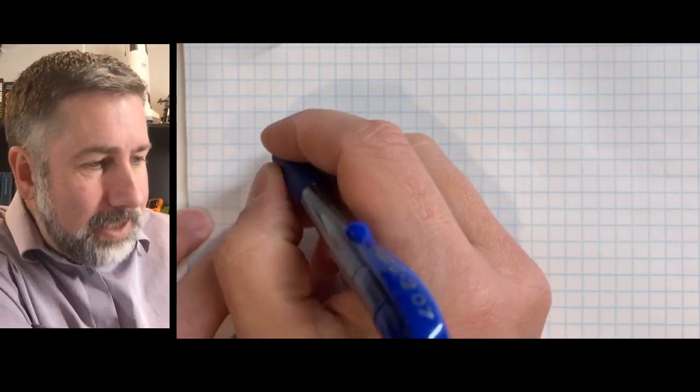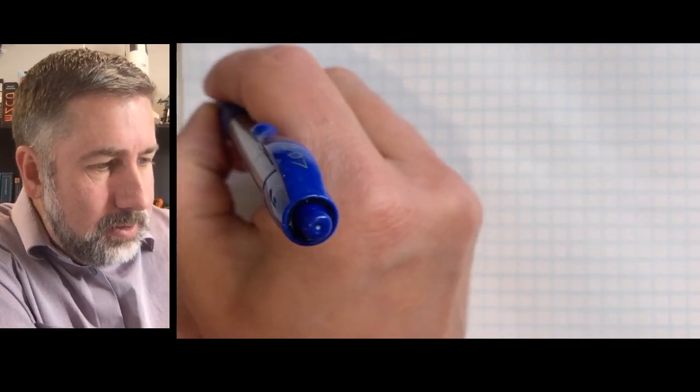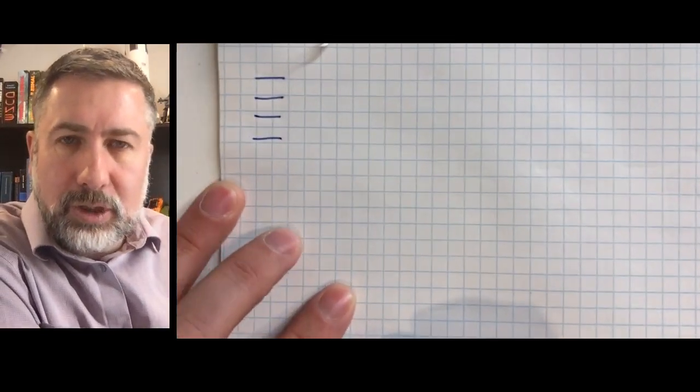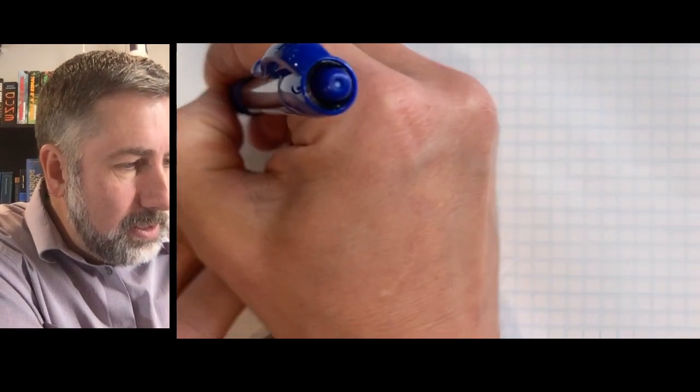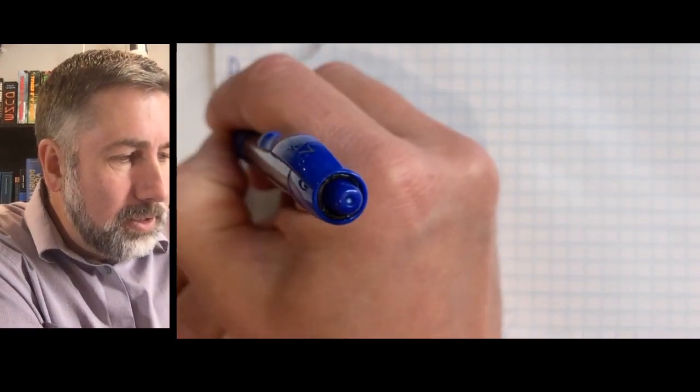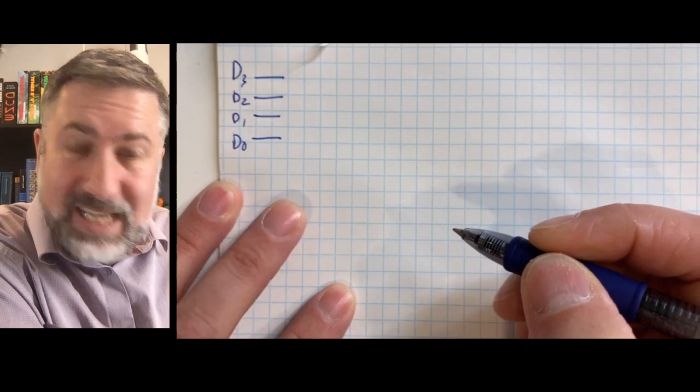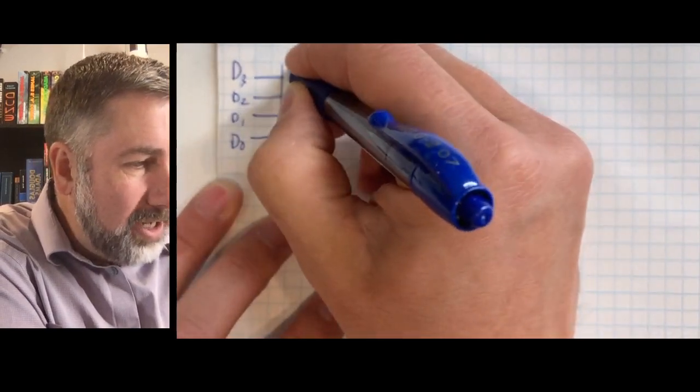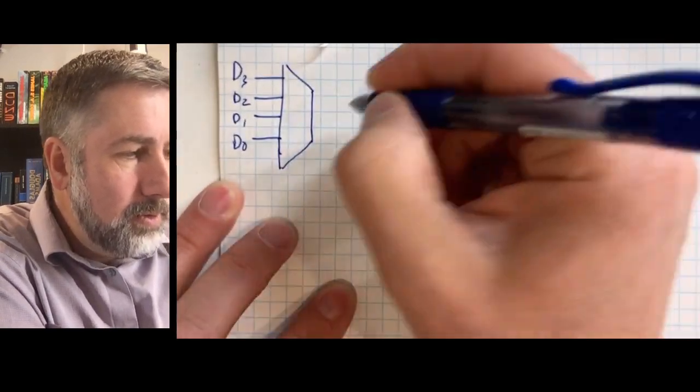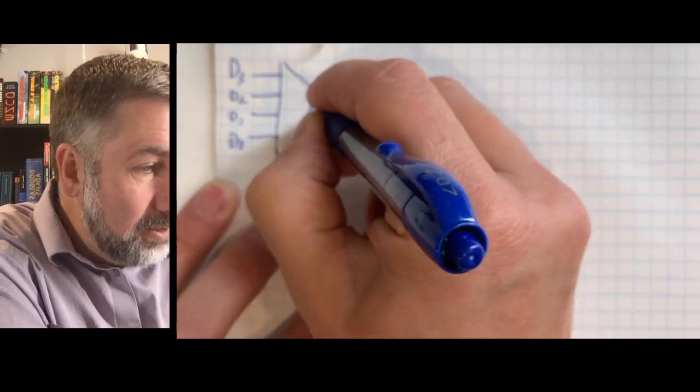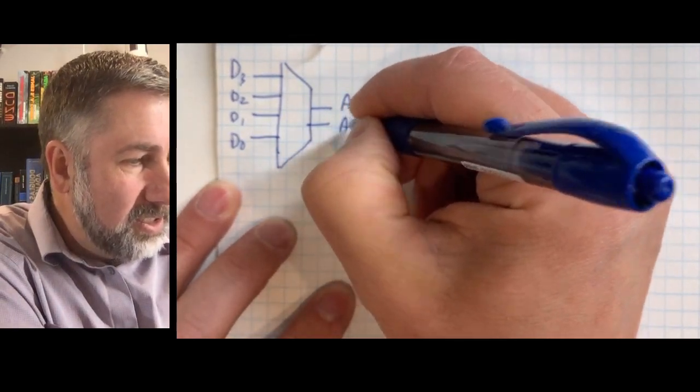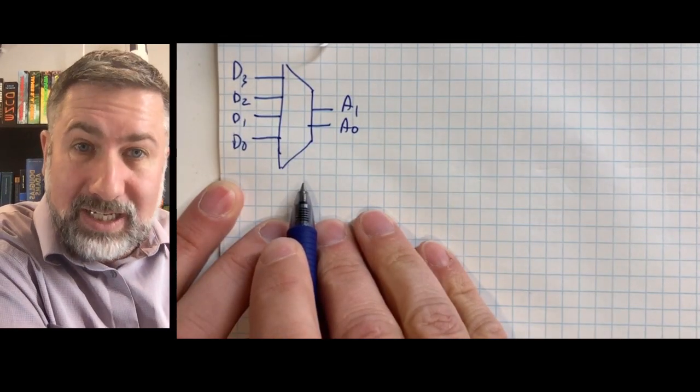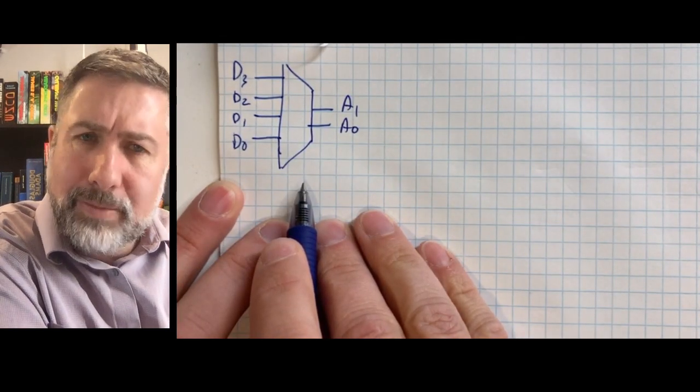So let's say we had four inputs, and again we're going to call these the data inputs D3, D2, D1, D0, and we want to know which of those is active. We need a box called an encoder that will tell us with address lines A1 and A0 which of those four lines is active. How would we build that?